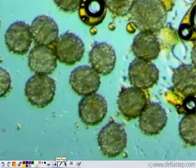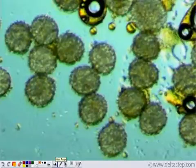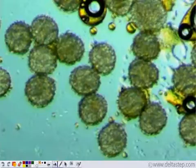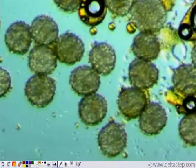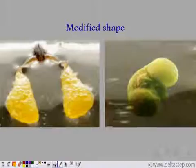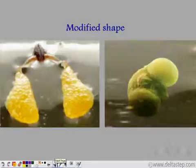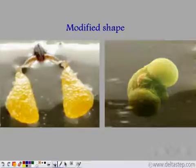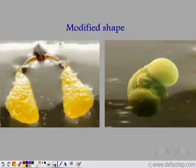For pollen grains to float on water, they need to have a smaller mass for a fixed volume, or if the mass is fixed, then the volume needs to grow bigger. So for pollen grains to float on water, they have a modified shape — they either become very lightweight or they change their volume; they increase their volume so that they can float on water and can bring about pollination.